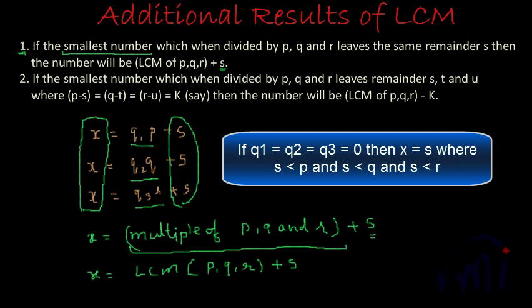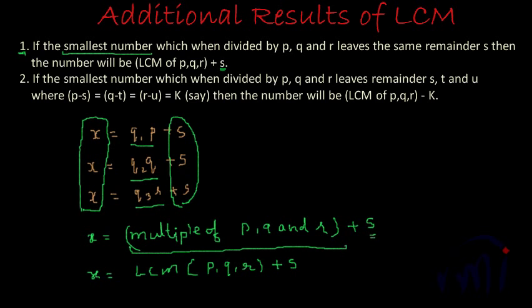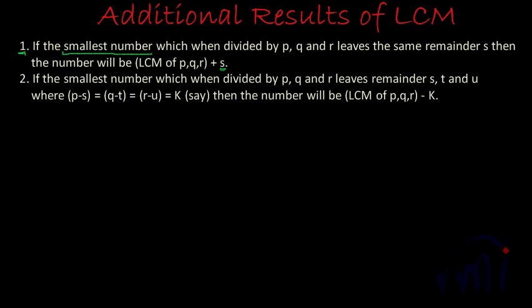So you have to remember what you are asked to find. That was our first result. Now let's go to the second result. The second statement says: if the smallest number, which when divided by P, Q and R, leaves remainders S, T and U respectively, where P minus S equals Q minus T equals R minus U equals K, then the number will be LCM of P, Q, R minus K.